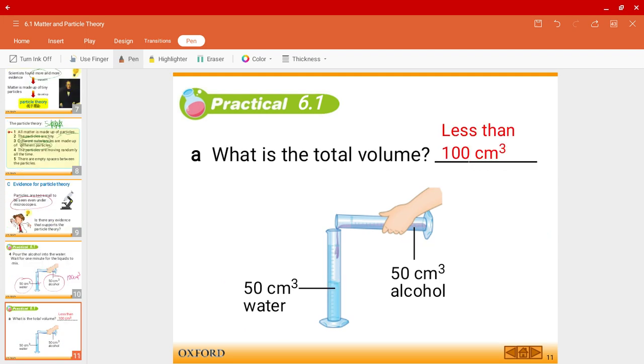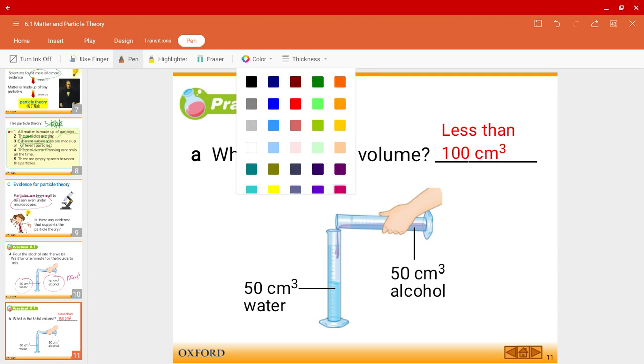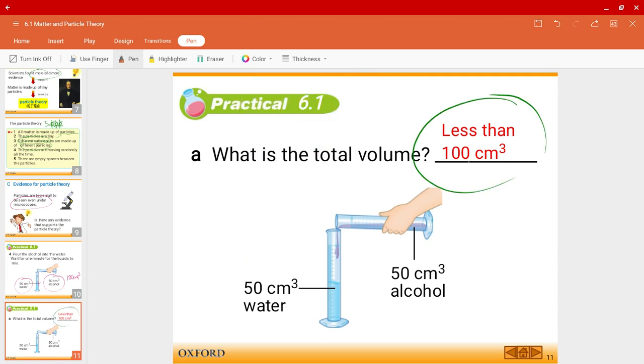Actually, this is not the case. The total volume that we get when we mix water and alcohol is actually less than 100 cm3. Just one more reminder. Cm3 is actually the same as ml, milliliters. Now why is this the case?